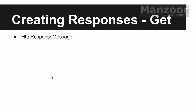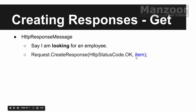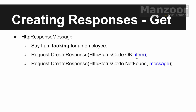I want to return an HTTP response message, so my return type should be HttpResponseMessage. Say I am looking for an employee — if that employee is available, I will say return request.CreateResponse, which creates an HttpResponseMessage object. In the response I'll say OK, meaning the record is found, and pass that record as a parameter.